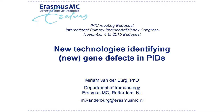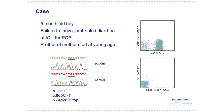I will start with a case to illustrate how genetic diagnostics can be done. It's a boy, five years old, who presented with failure to thrive, protracted diarrhea, and he was in the ICU for a PCP infection. He had a brother whose brother of the mother died at a young age.